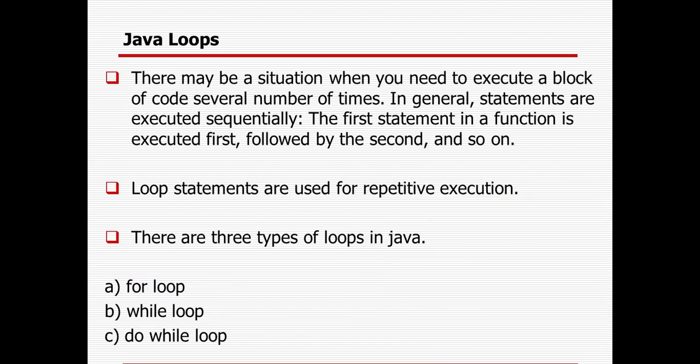So what is Java loops? There may be situations when you need to execute a block of code several number of times. In general, statements are executed sequentially — the first statement in a function is executed first, followed by the second, and so on. A loop is generally used when there is a repetitive execution required. In Java, there are three types of loop available: the first is for loop, then while loop and do-while loop.